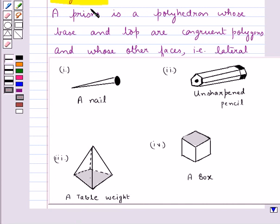The last figure is of a box. In this figure, the base and the top are congruent polygons and the lateral faces are also parallelogram in shape. Therefore, this satisfies the conditions of a prism. Hence, a box is a prism.